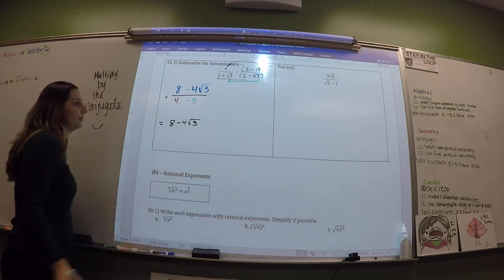Now we're going to rationalize the denominator when the denominator is a binomial. When the denominator is a binomial, you have to multiply by the conjugate — that means the same binomial but with the opposite sign in between. So if the denominator is 2 plus root 3, you multiply by 2 minus root 3.